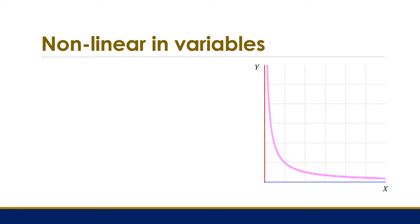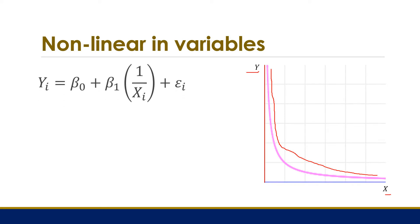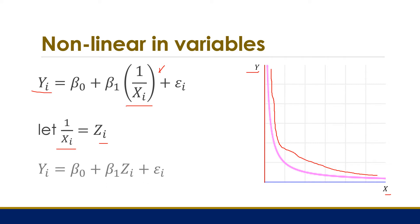Another example is when the dependent variable is related to the reciprocal of the independent variable. You can see from the plot that the slope is nonlinear. Such a model can be represented by an equation where the values of y are related to the reciprocal values of x. We can transform it to linear form by letting 1/x equal z_i, and when we replace 1/x with z_i, the resulting equation is a linear model.